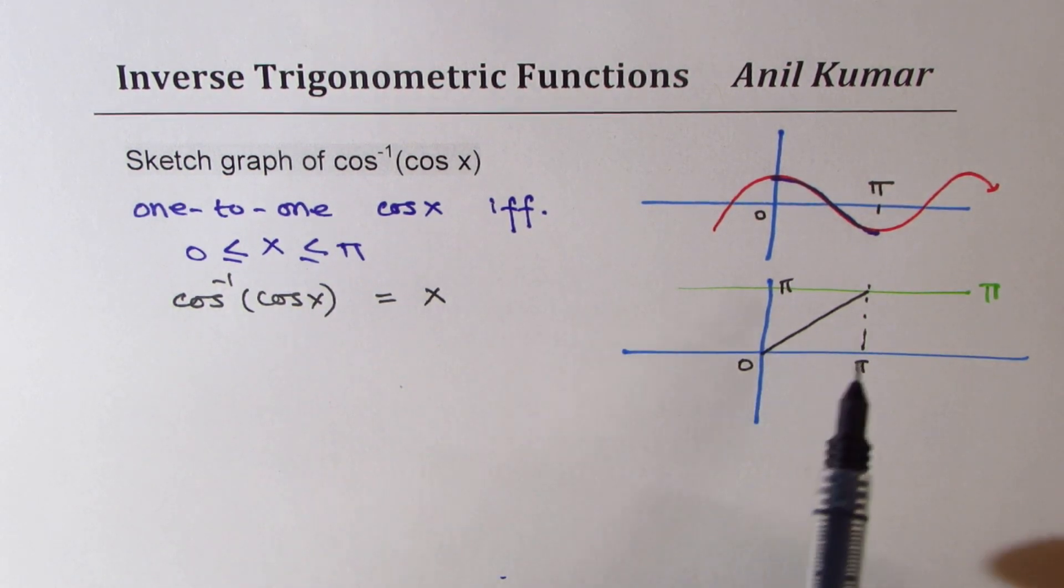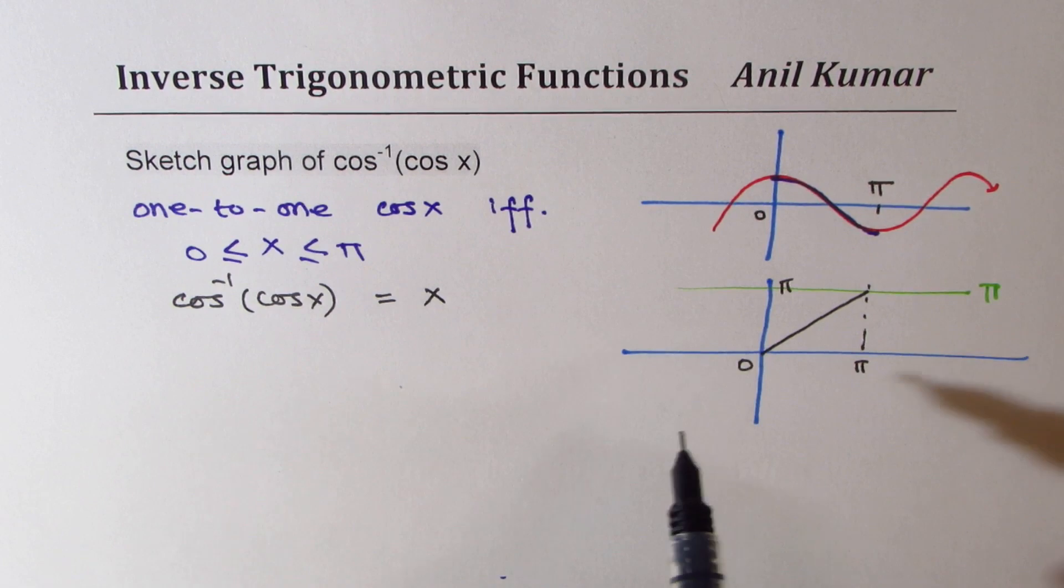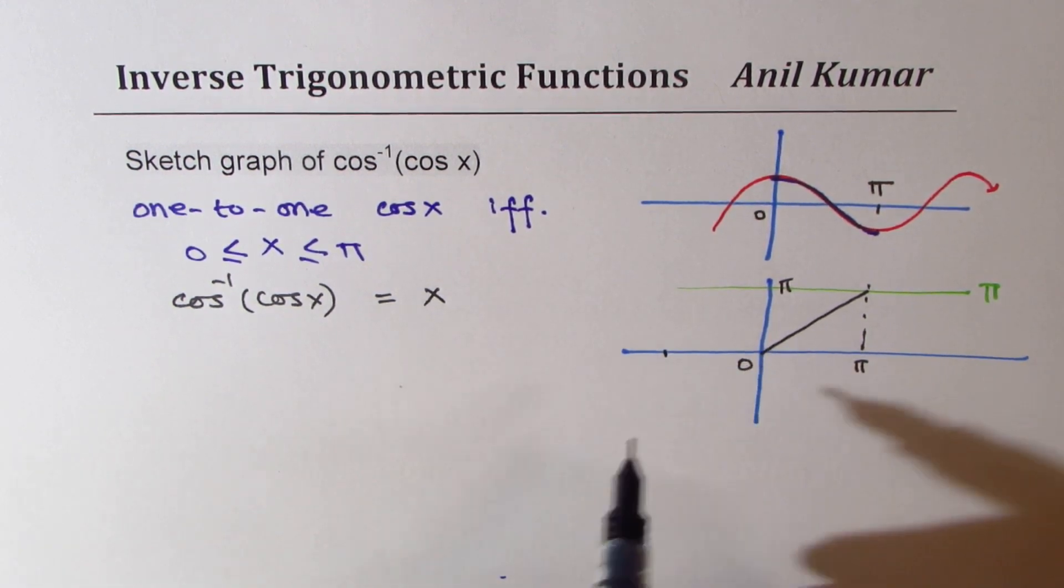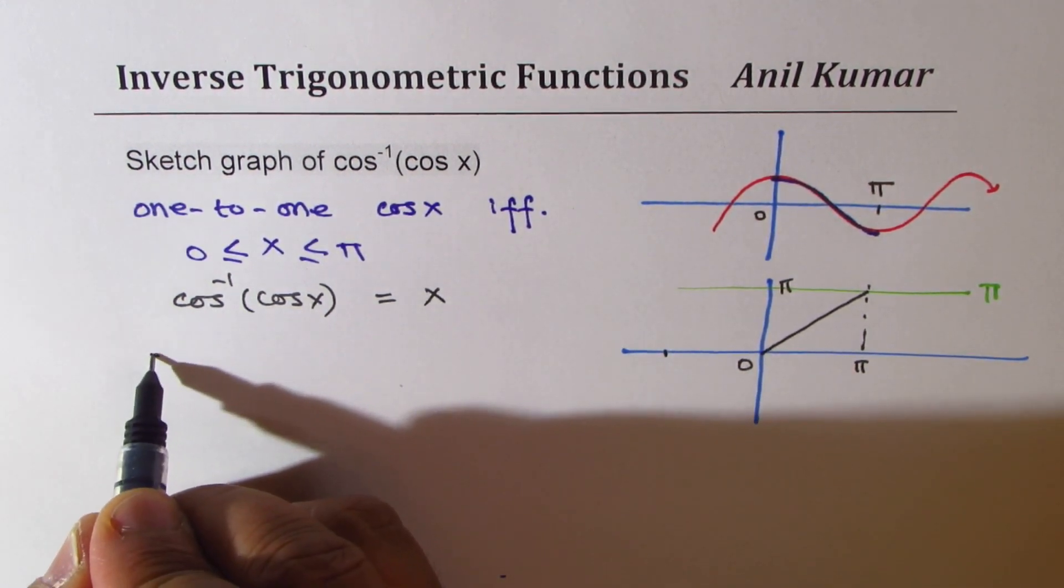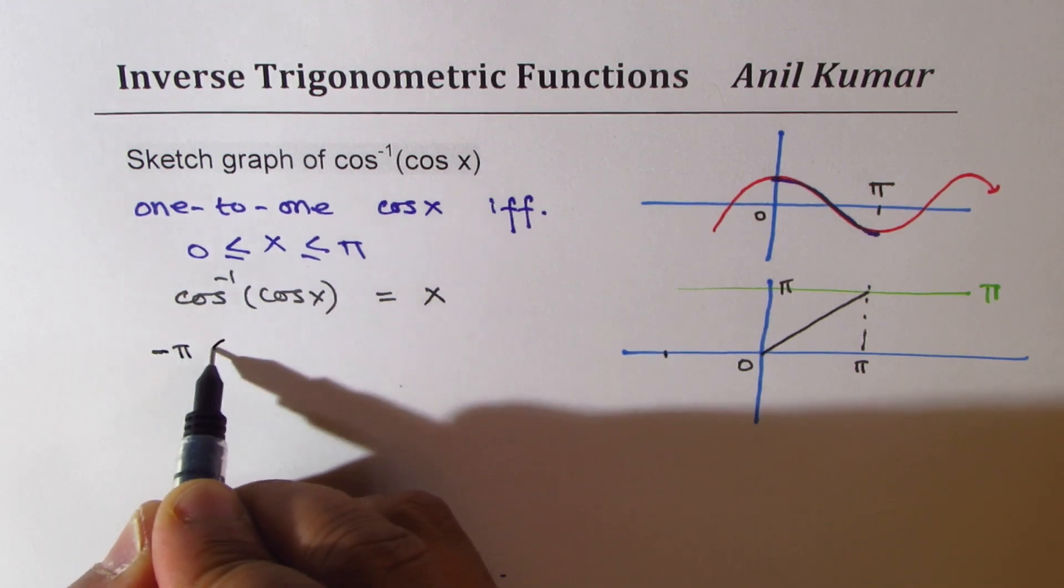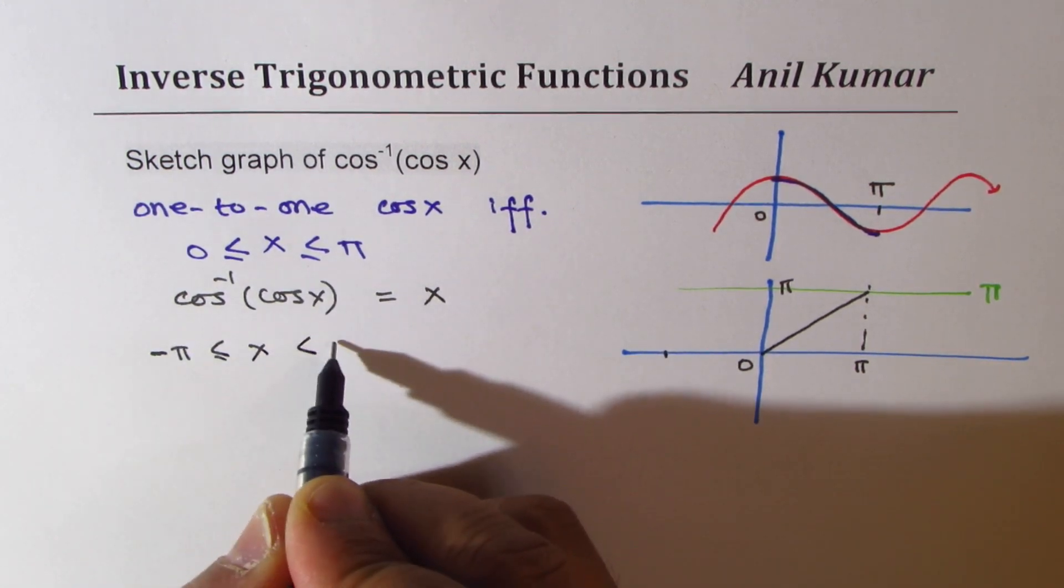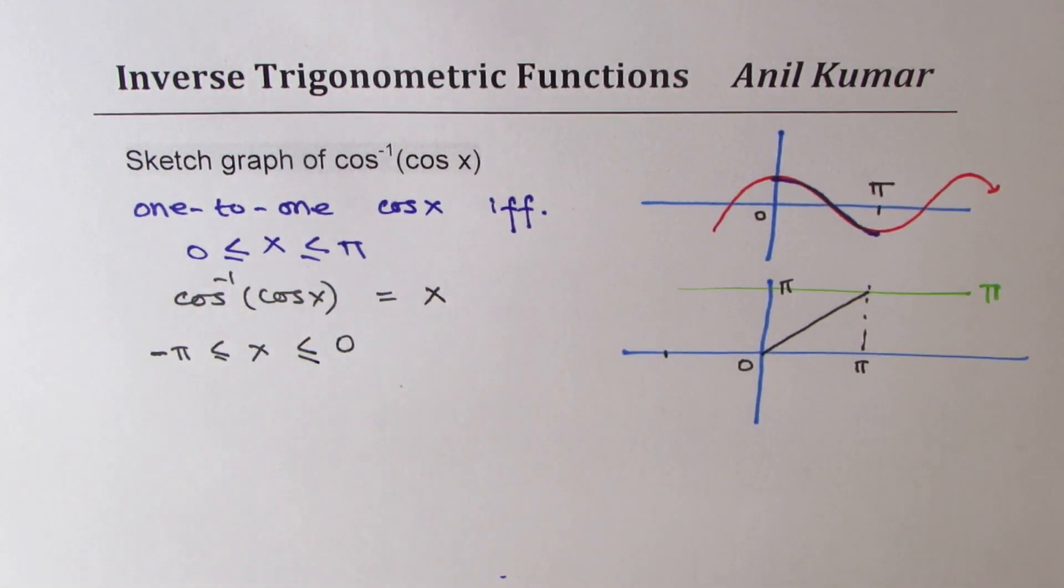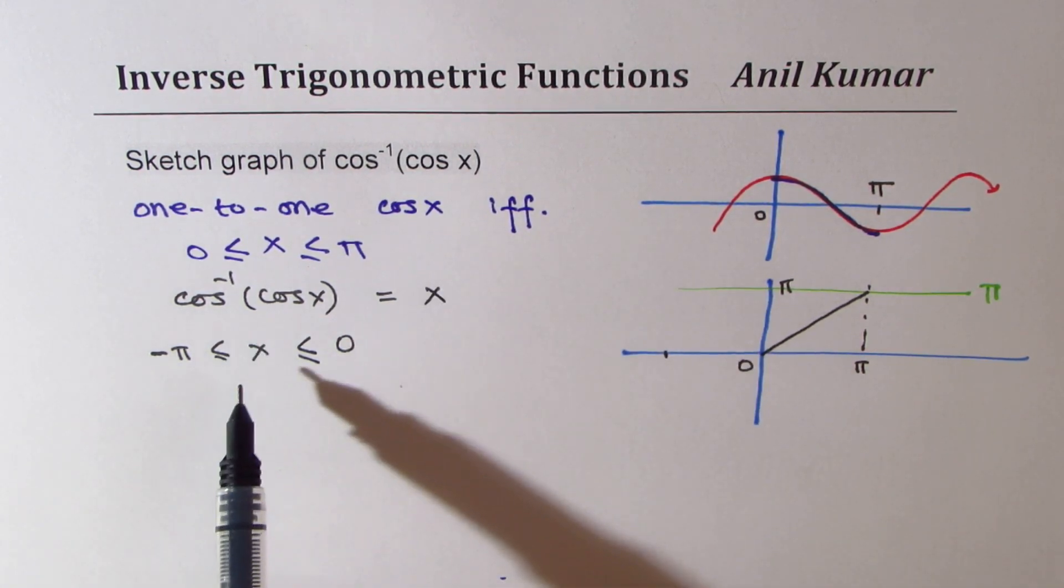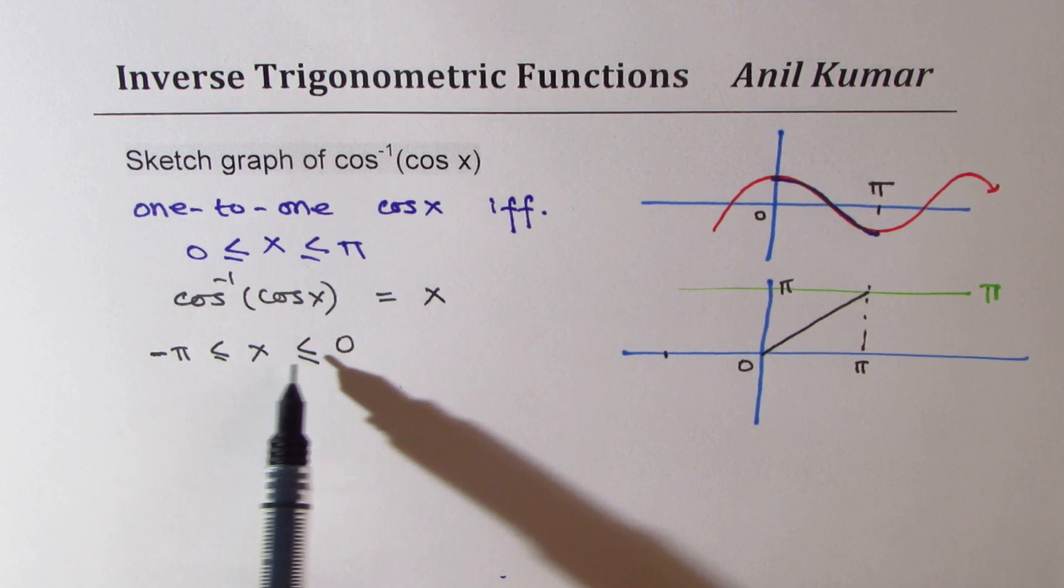Now, what happens when you are working in the interval, let's say, minus pi to 0? If you are in the interval minus pi to 0, then what happens? Well, in this particular interval, from minus pi to 0, it should be negative value.